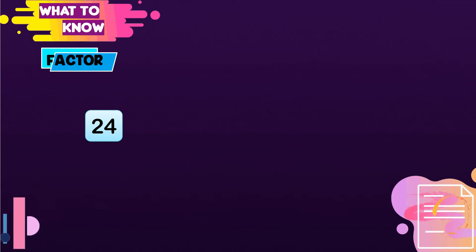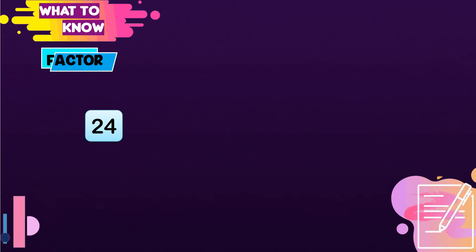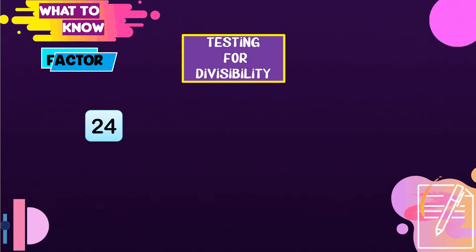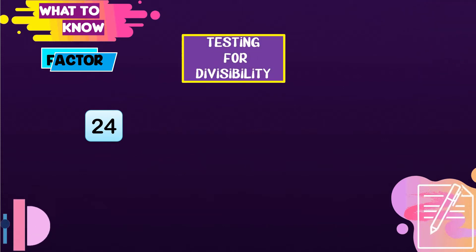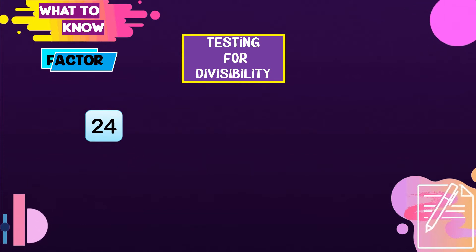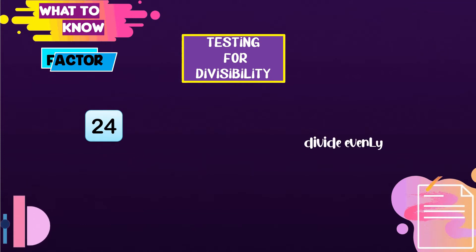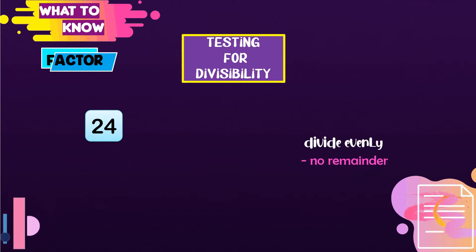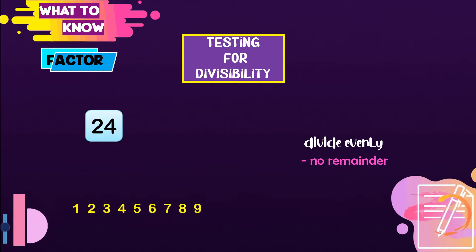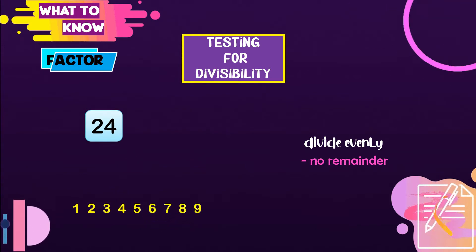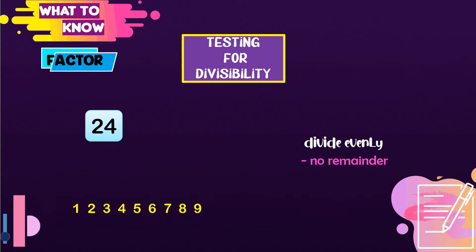What to know? Here, we need to get all the factors of 24, and we can use the testing for divisibility. From the word divisible, it means we can divide 24 by any number without remainder. Now, let's try to divide 24 by the counting numbers 1 to 9.